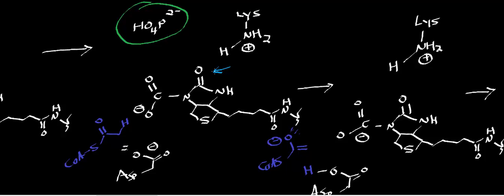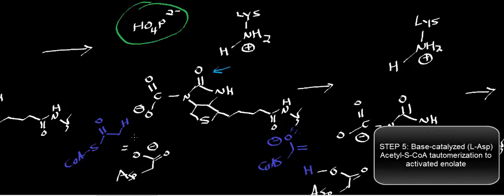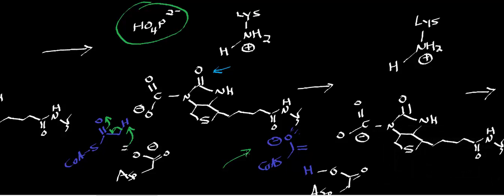Both residues are going to be involved in Brønsted-Lowry acid-base proton transfers. In the first step, we're going to tautomerize acetyl-CoA. This critical aspartate residue in the active site is going to deprotonate the alpha-carbon of acetyl-CoA, forcing tautomerization. In the process, we generate an enolate version of acetyl-CoA, and as we know from carbonyl chemistry, enolates are very unstable and highly reactive.